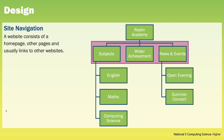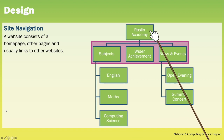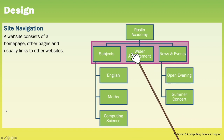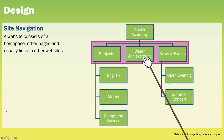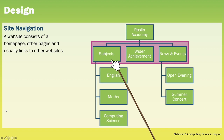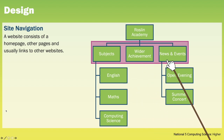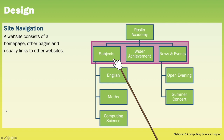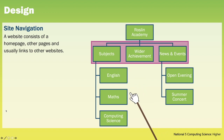We have an example on screen for Roslyn Academy. You can see that we have a home page that we land on and then three sub pages. These three sub pages will form part of our main navigation bar within the website, and within the subject section of the website we then have three pages on the next level down.